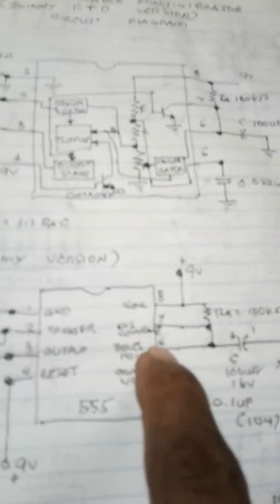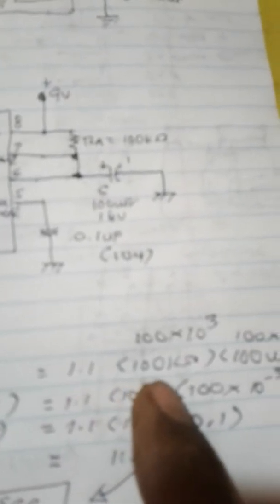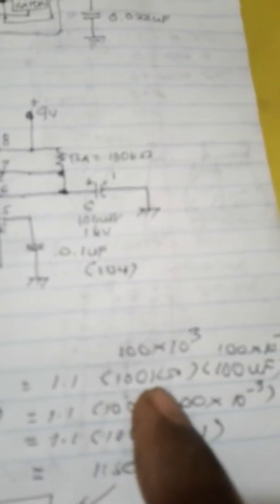This one is connected to ground and to pin number 6. I computed the time constant according to the formula 1.1 RA C, so 1.1 times 100 kilohms for RA, and then 100 microfarad, which is 100 times 10 to the negative 6 farad.